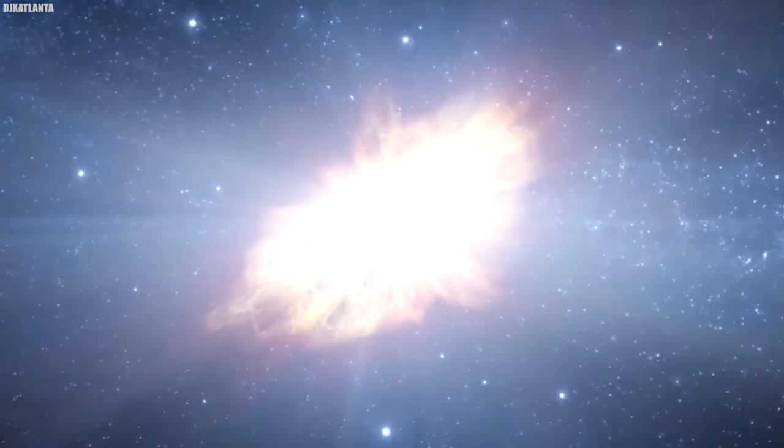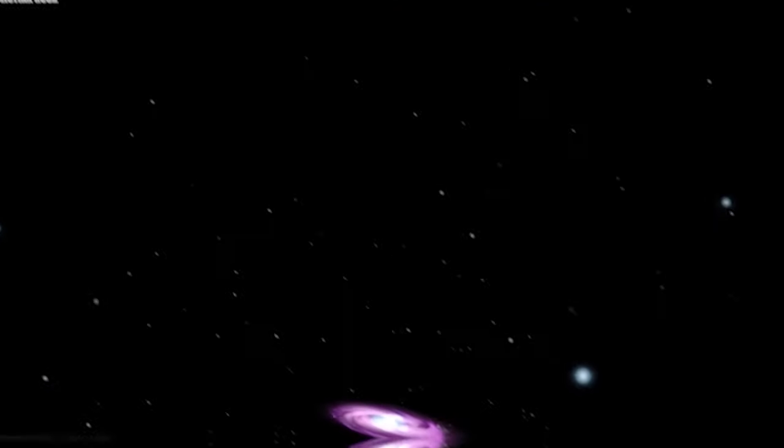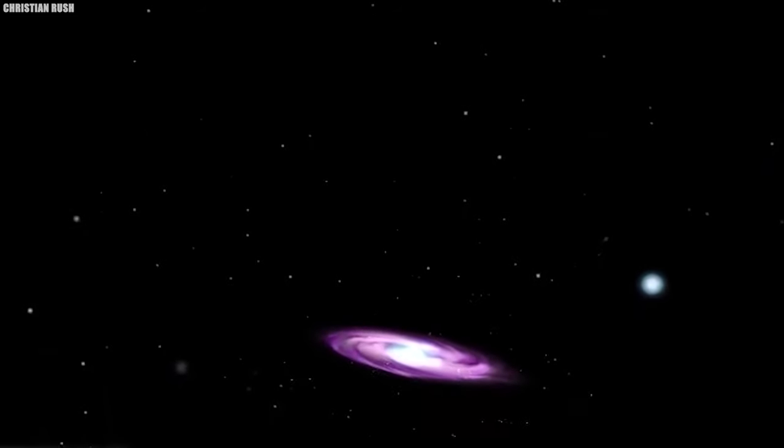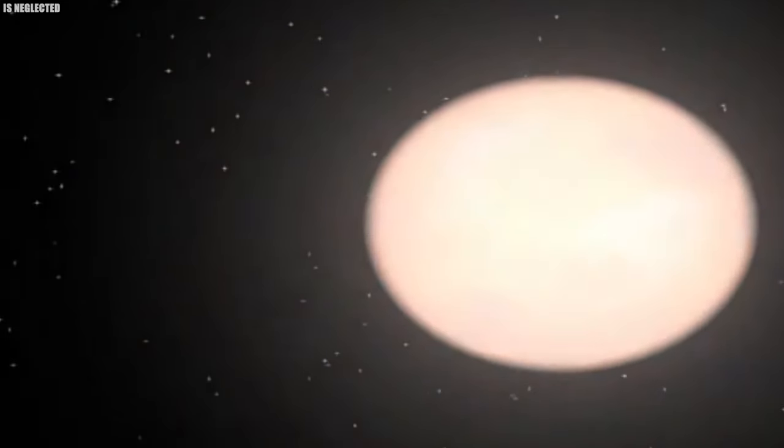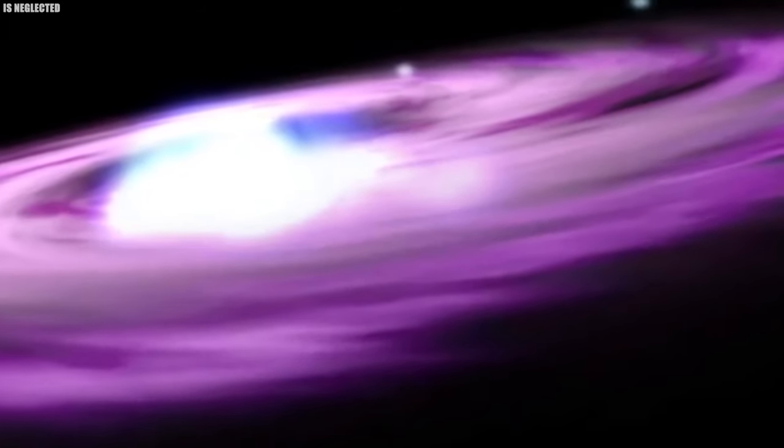Supernovae are broadly categorized into two types based on their characteristics, type 1 and type 2. Type 2 Supernovae commonly occur in massive stars with delicate layers. In this scenario, the core collapses and the outer layers are explosively expelled, resulting in a burst of light and energy visible from great distances.